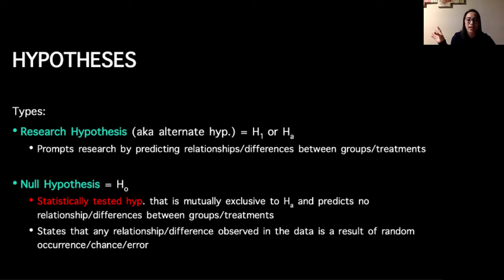When we run all of our analyses, the p-values—which you don't know what a p-value is yet—but the results we get from statistical tests are always related back to the null hypothesis. The null hypothesis is kind of the Debbie Downer of hypotheses, so it always predicts that there's no relationship between groups or treatments or there is no effect if we're looking at cause and effect.